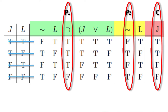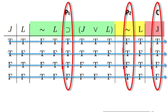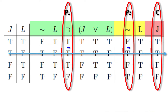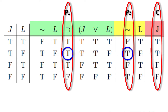Now we look for a row in which the premises are both true. There's only one row — the second row — where the premises are both true. If we look at the conclusion column, we discover that it's also true in the second row. So we've found a row where the premises are all true and the conclusion is also true.